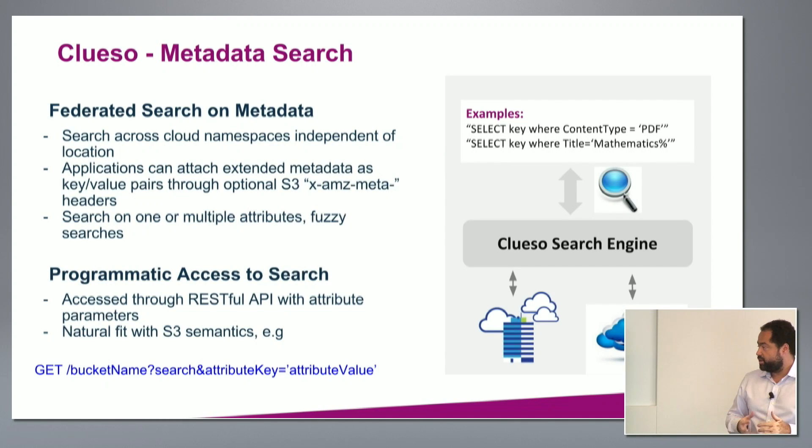I want to talk about metadata search — we have another section with a demo, but it's key to this. When you look at Amazon itself, the search capabilities are very low. If you have millions of objects in Amazon, it's hard to locate anything. You can do listing and prefix search on file names, but looking at metadata, tags, date of creation, and last access — those things are missing. We wanted to build that as part of Zenco, and we call it Clueso. It'll be an open-source project for federated search on metadata across whatever Zenco backend you're using, with an SQL interface or API to search any metadata header or system metadata like creation time and ownership.